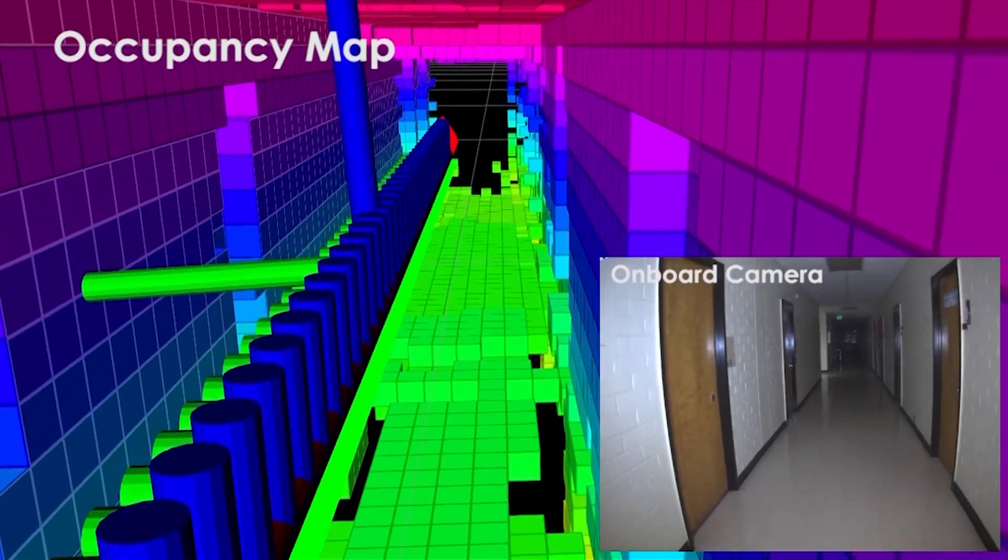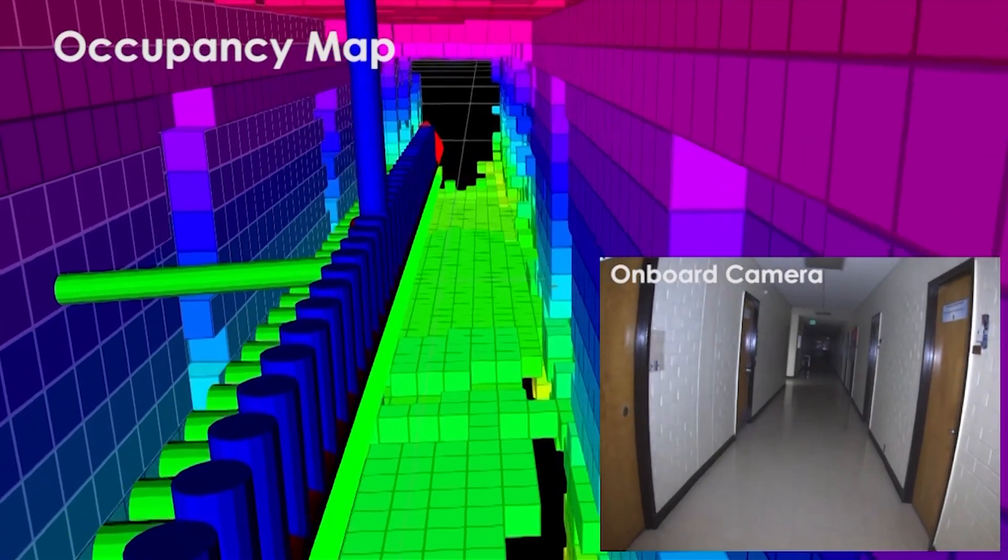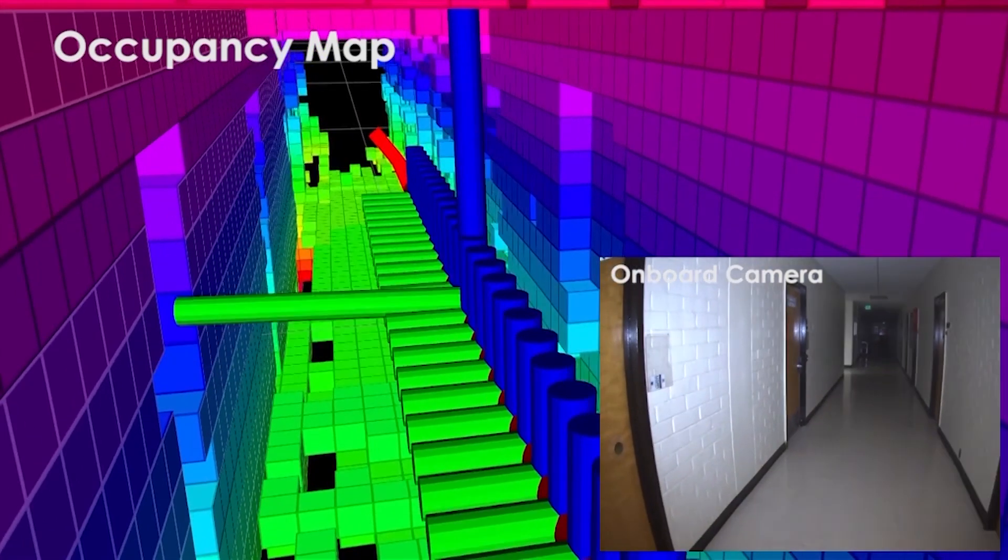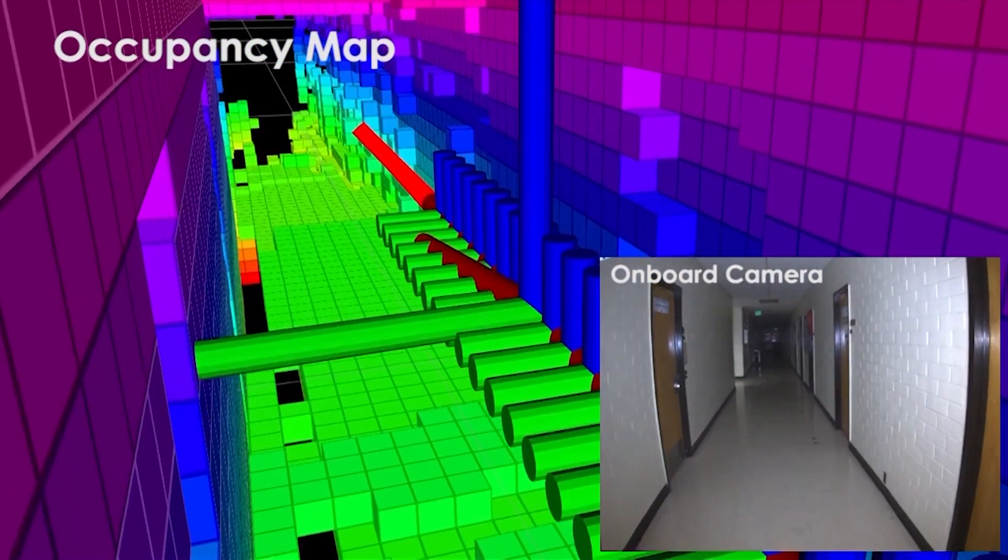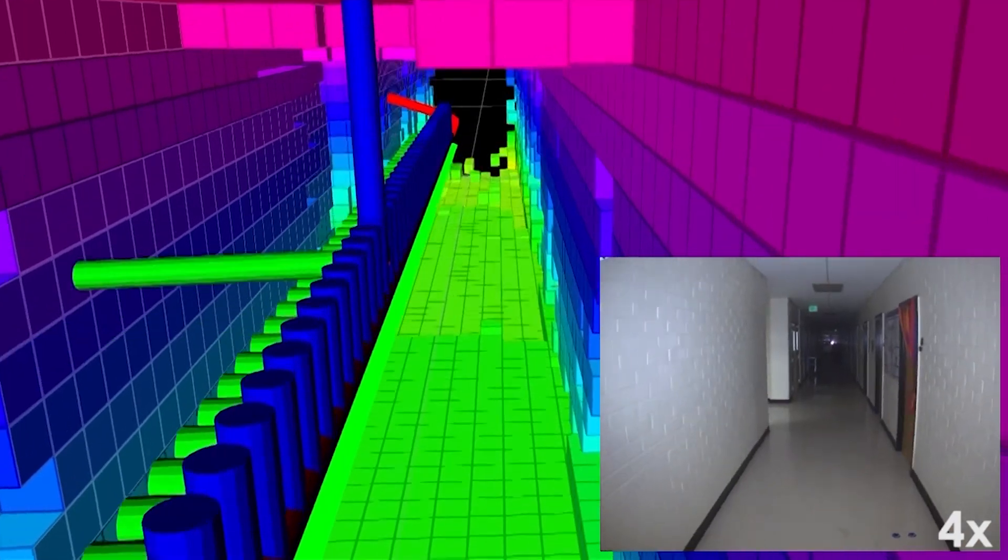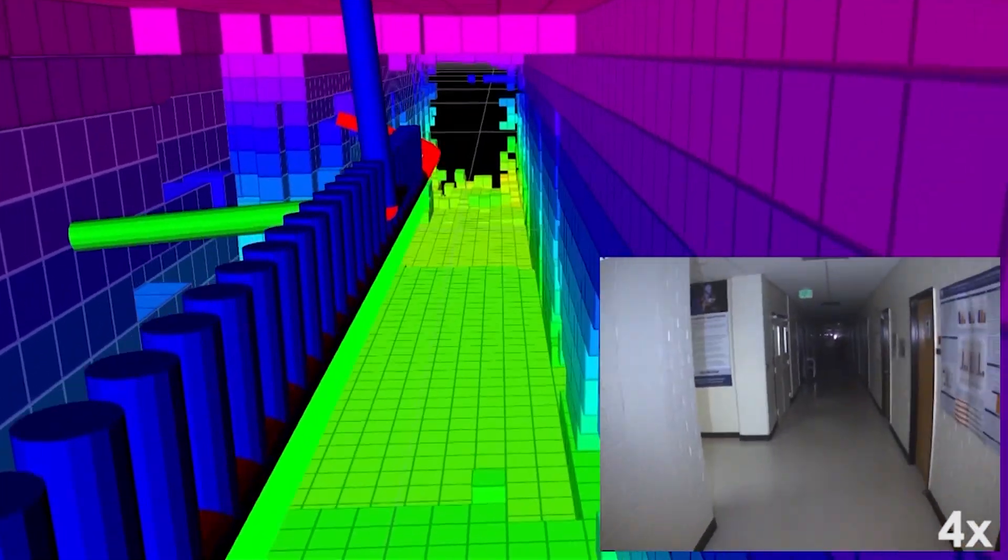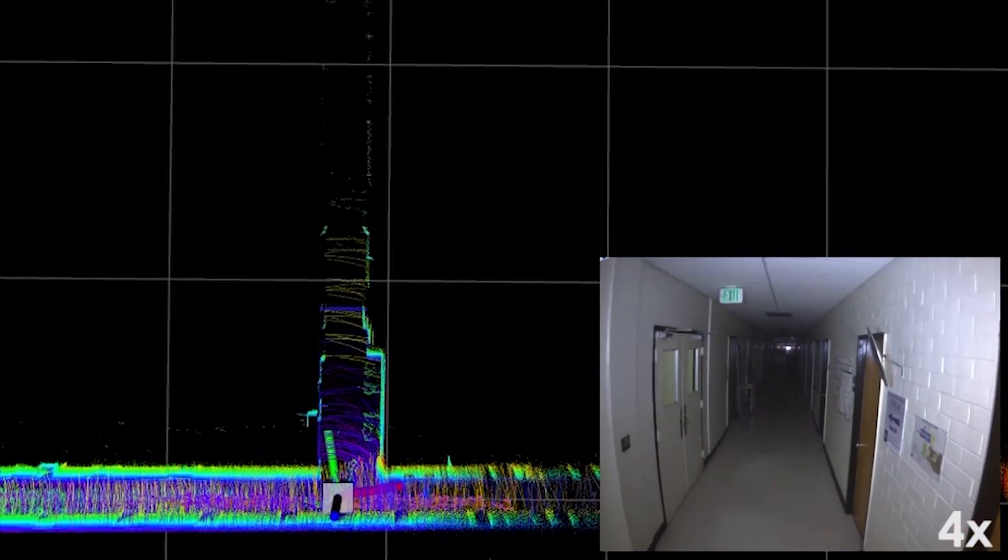Besides, the global planning layer utilizes a graph search method to reposition the robot towards unexplored areas when it reaches a dead end. It is also responsible for providing the shortest return-to-home path once the robot's battery goes to a critical level.